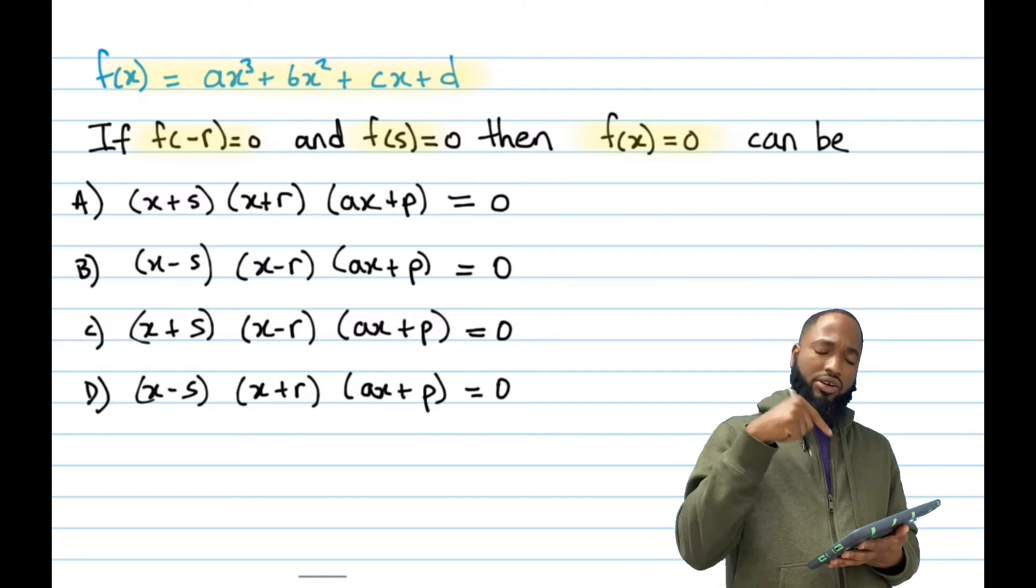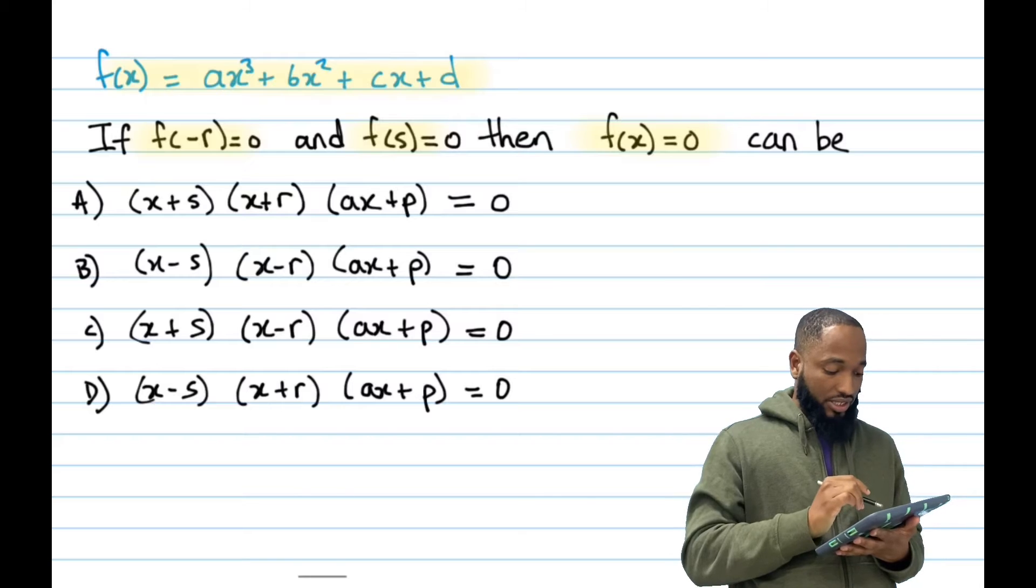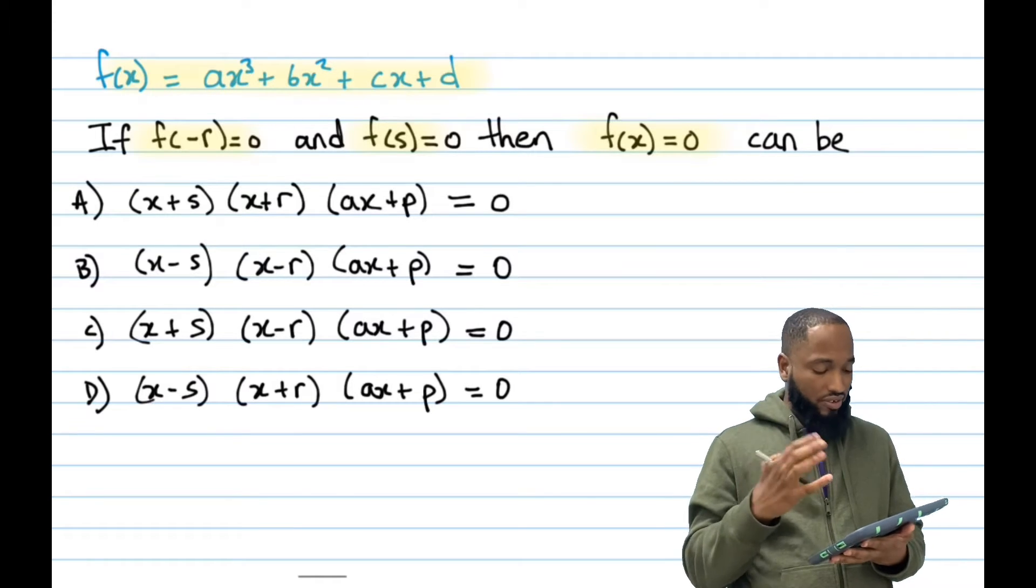This is a pretty tricky factor theorem question here. f of x is equal to a x q plus 6 x squared plus c x plus d. Can you solve this?